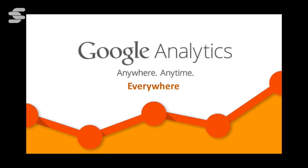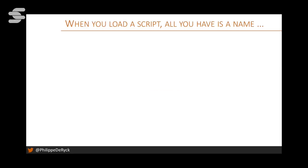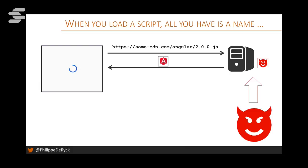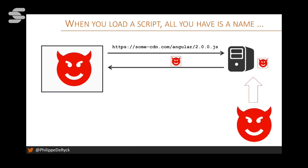What happens when you load a script from a CDN? All you have is a name. You request a specific Angular file, the CDN gives you a file that looks like Angular. What happens if somebody attacks the CDN and puts malicious code there with the same name? You request a script and get a malicious script in return. There's no way to know what code you're loading — you have to hope you're getting what you expect. Maybe it was correct when you checked; maybe it changed. There's very little you can do to protect yourself against that, and it happens in practice.